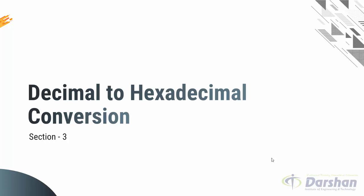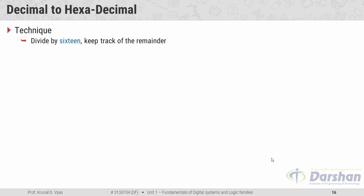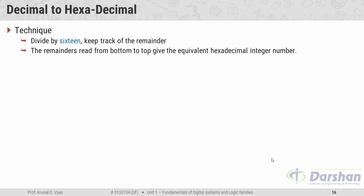The third section covers decimal to hexadecimal conversion. If you remember decimal to binary and decimal to octal conversion, then decimal to hexadecimal is very easy. We use the successive division method for integers and successive multiplication for fractions. For decimal to hexadecimal, we divide by 16 and track the remainder; remainders read from bottom to top give the equivalent hexadecimal integer.